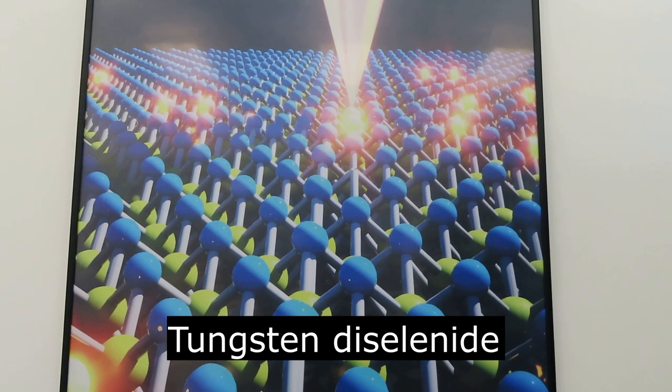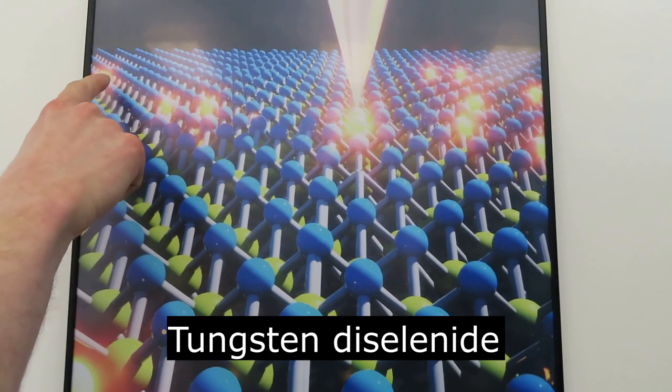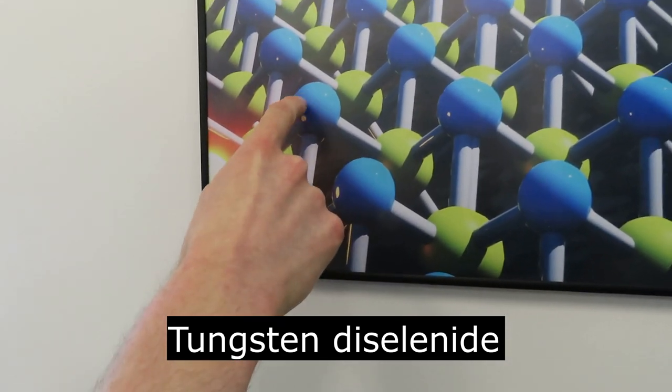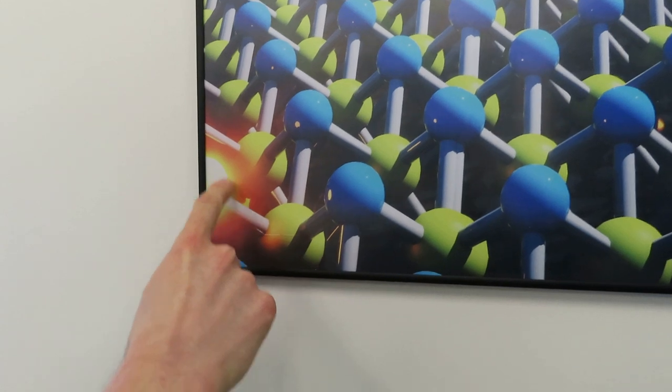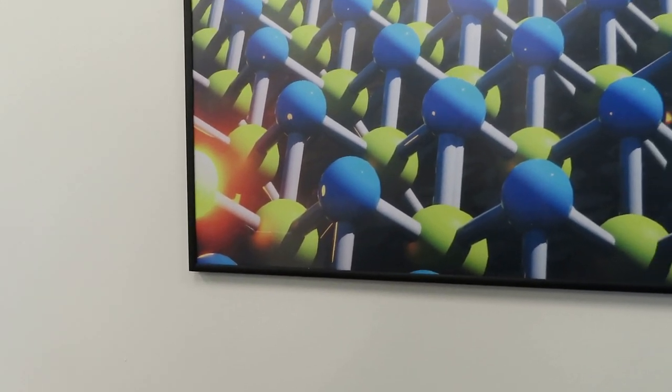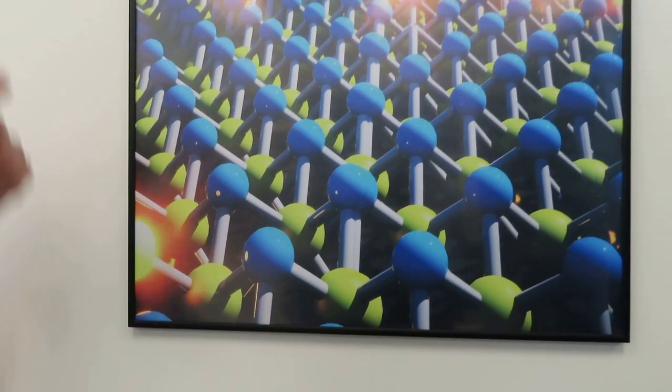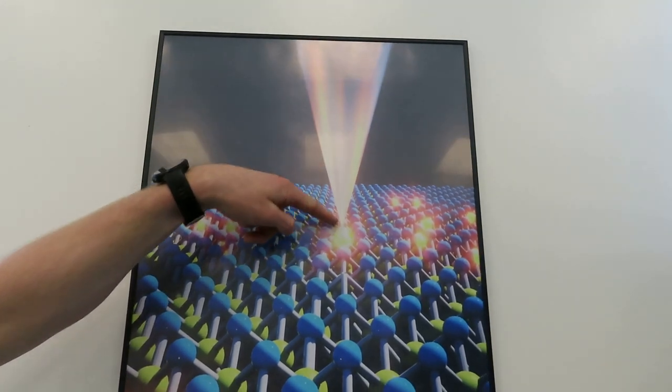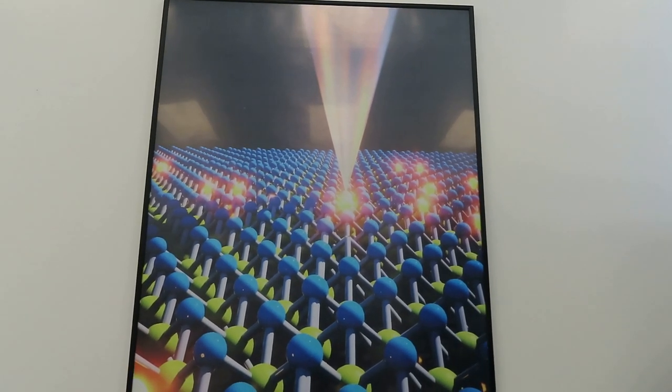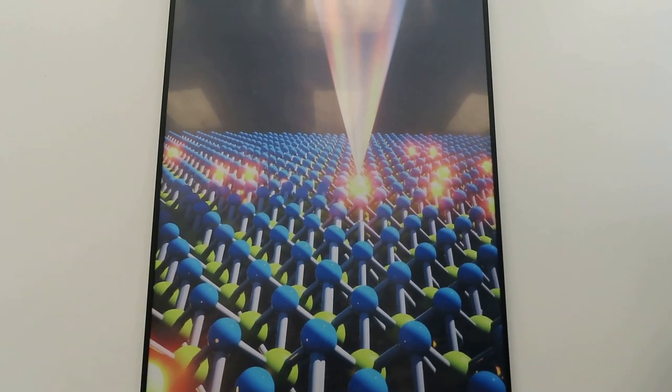You can also have substitution defects, so for example over here, instead of one of these selenium atoms, you have some other atom, maybe an oxygen atom that's replaced it. There are different kinds of defects, but these are a few that happen in this material. What we can do with our STM is bring our tip very close to one of these defects and we can study the effect that that defect has on the local electronic structure. Wow, that's amazing.